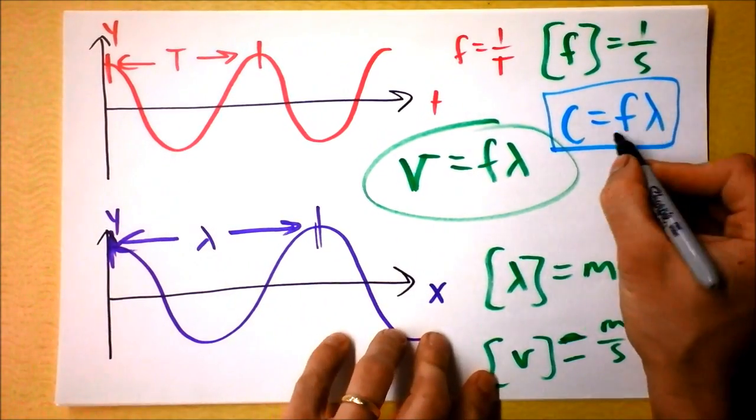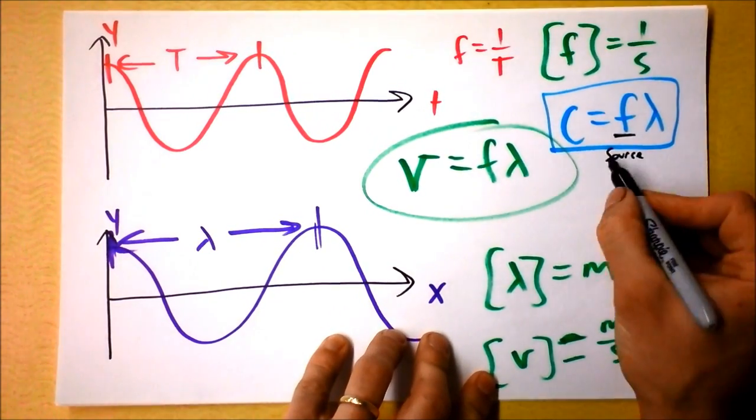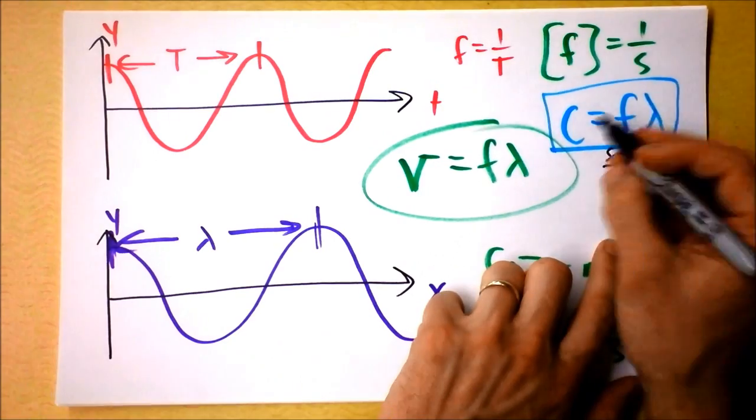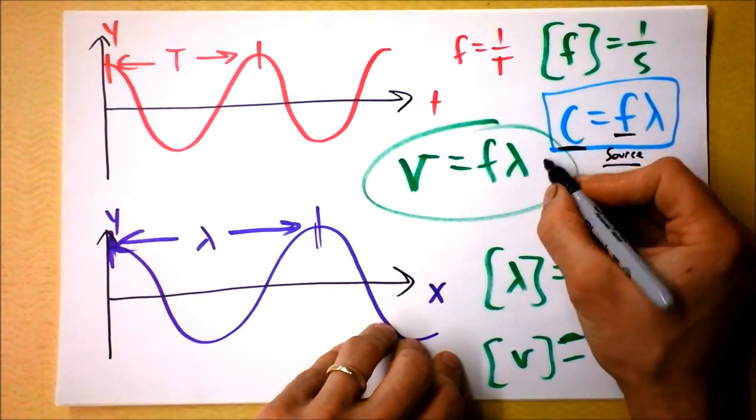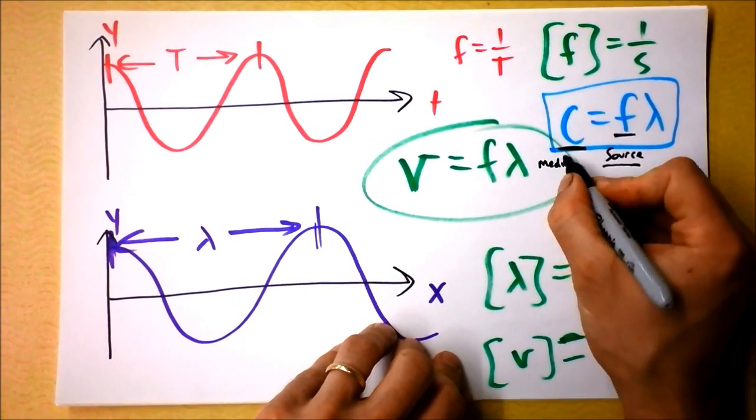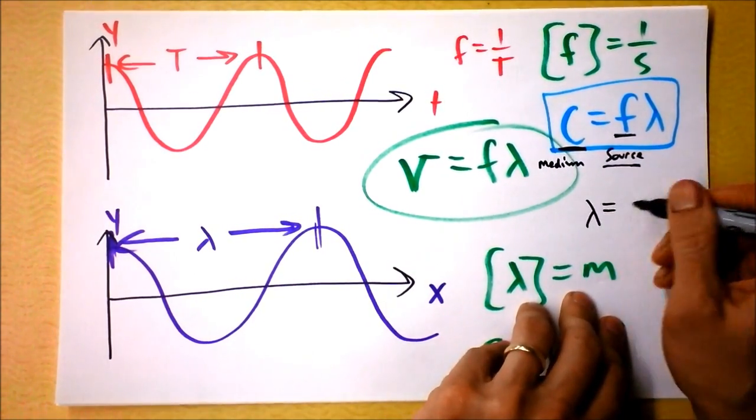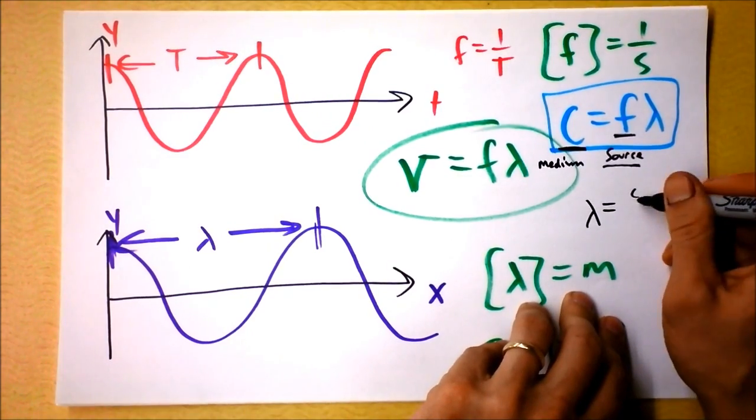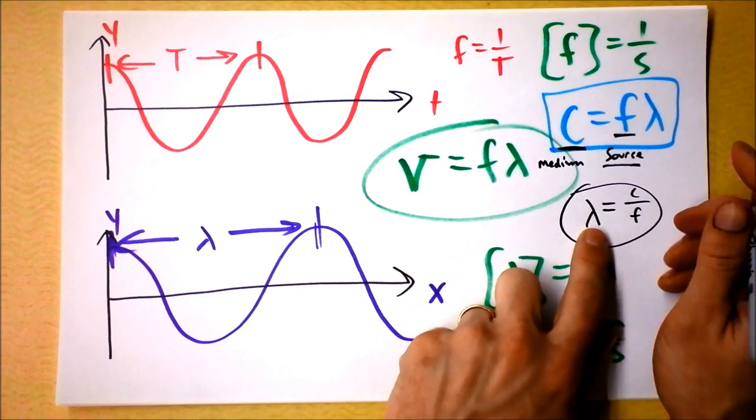I also want to say that frequency is determined by the source of the wave and the speed of the wave. In a general sense, the speed of the wave is determined by the medium of the wave. And lambda is determined by the speed of the wave divided by the frequency.